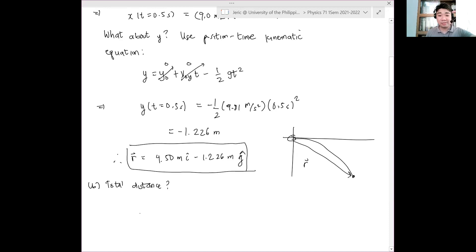You determine the total length by using your Pythagorean theorem. This is squared modulus of R, which is just equal to 4.5 meters quantity squared plus minus 1.226 meters quantity squared. And when you do that, the answer is 4... This means that the total distance is 4.664 meters.